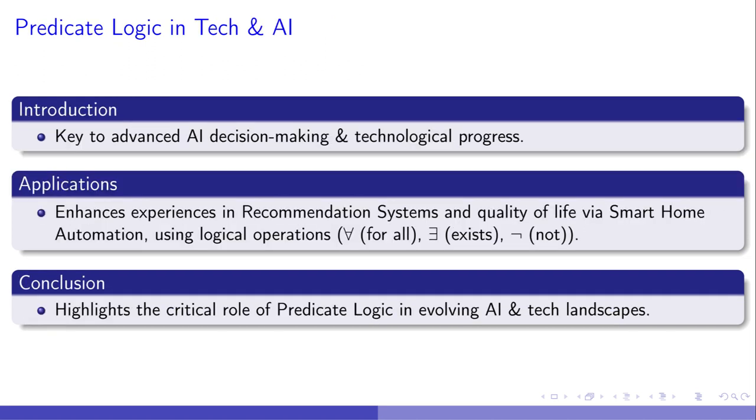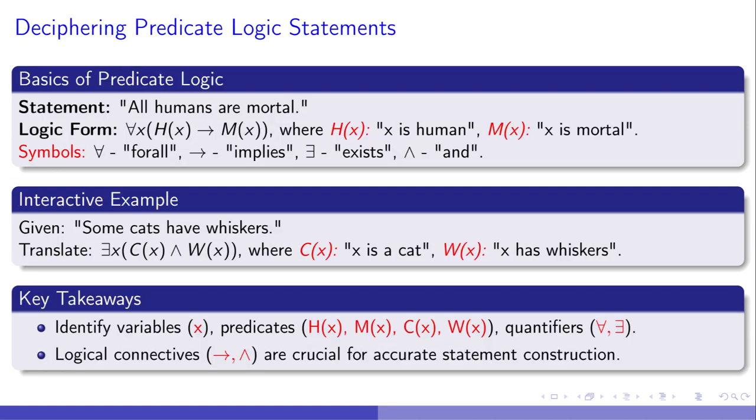Transitioning from our dive into the realm of logical connectives, we pivot to their application in AI and technology. Specifically, consider the smart thermostat. By employing for all times and exists, it learns and adapts to your preferences, ensuring your home is optimally cooled as you arrive. How do these logical symbols function? Within recommendation systems, exists is leveraged to pinpoint movies that align with your tastes, whereas ¬ helps filter out genres falling outside your preference. This fusion of logic with technology does not merely power innovations we depend on today, but paves the way for next-level advancements, bridging us seamlessly to even deeper applications of predicate logic in the tech sphere.